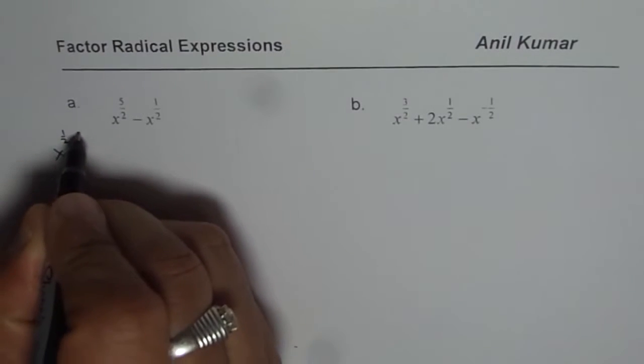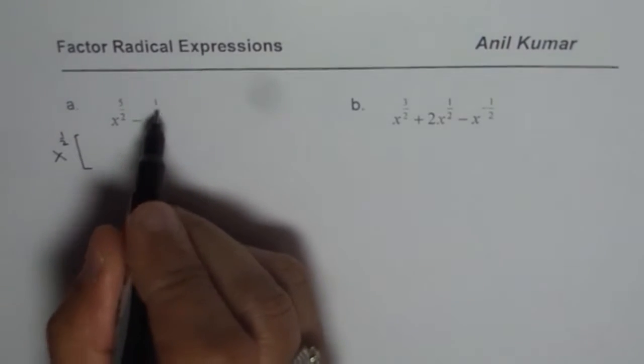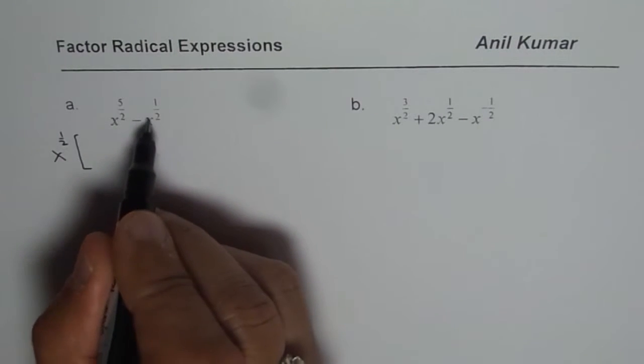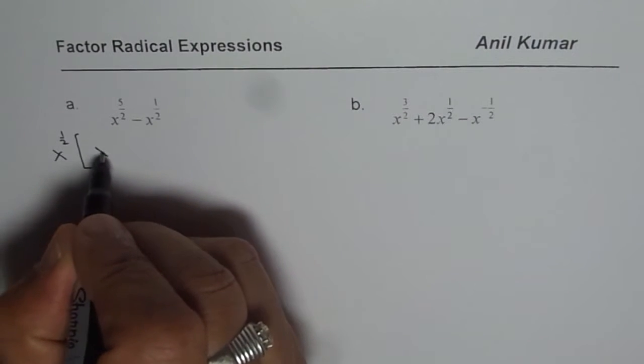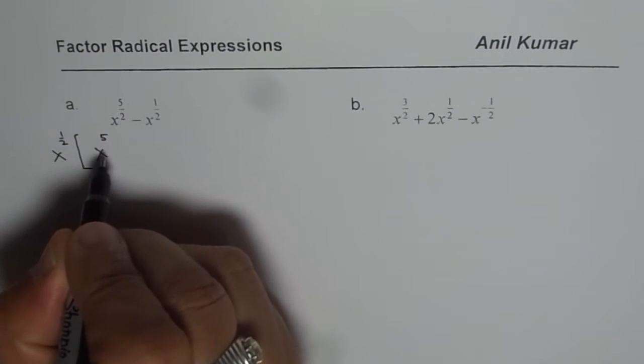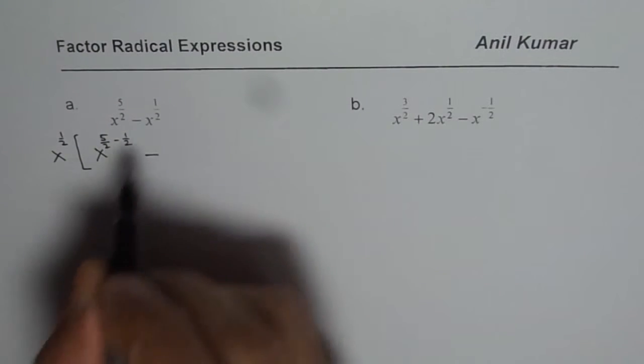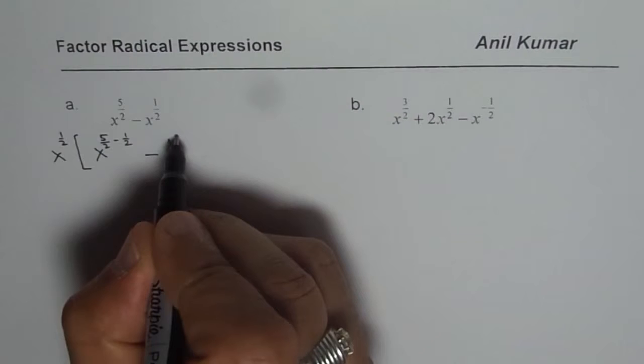So x to the power of half you factor. Once you factor x to the power of half, you have to divide this term by x to the power of half. Dividing means taking away the exponents. So we will have x to the power of 5 over 2 minus half minus, we have already factored this, so we get 1 here.